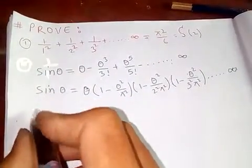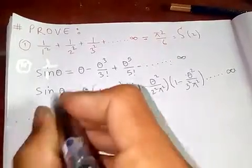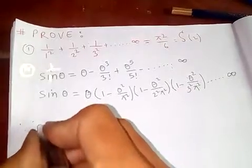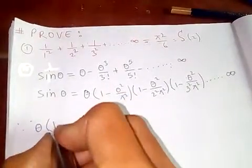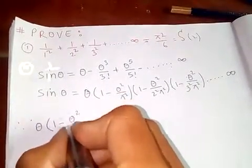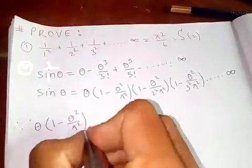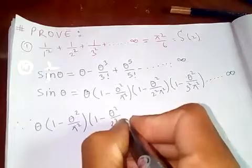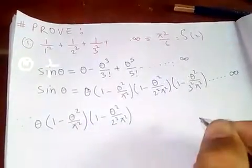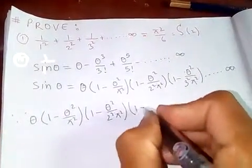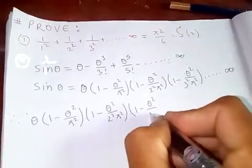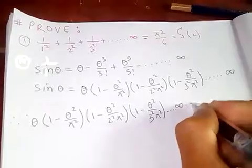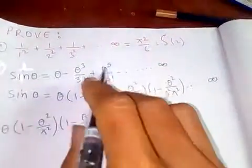If we equate these two expressions — since the left-hand sides are equal, the right-hand sides must also be equal. So: θ(1 - θ²/π²)(1 - θ²/2²π²)(1 - θ²/3²π²)... equals θ - θ³/6 + θ⁵/120 - and so on.